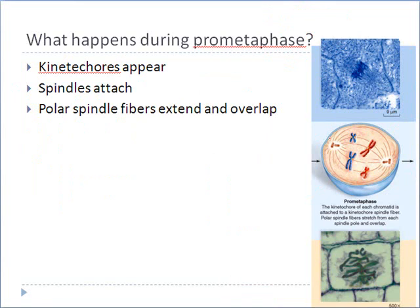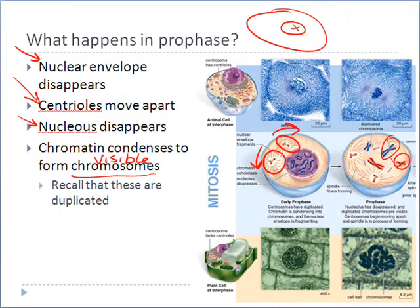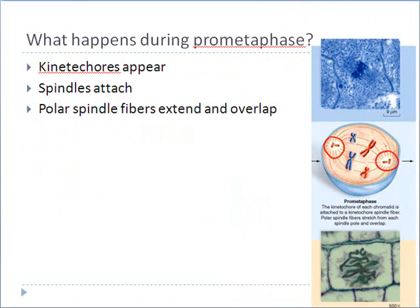In prometaphase, those centrioles have now moved to opposite sides of the cell — like the north and south pole of the cell. Those centrioles begin to grow spindle fibers, which are microtubules extending out from the centrioles. When those microtubule spindles connect with the kinetochores on the chromosomes, we are now in prometaphase.